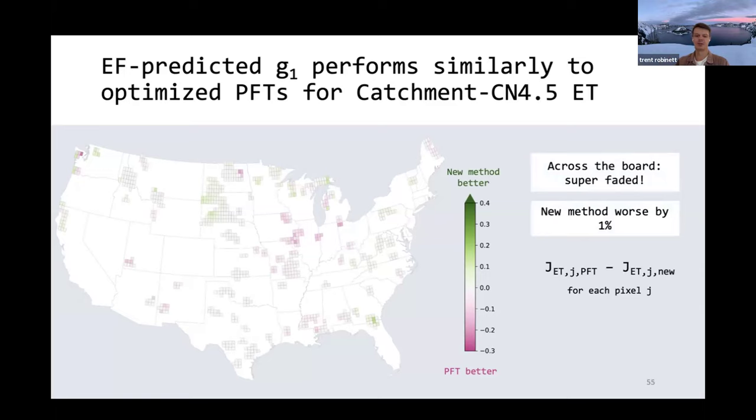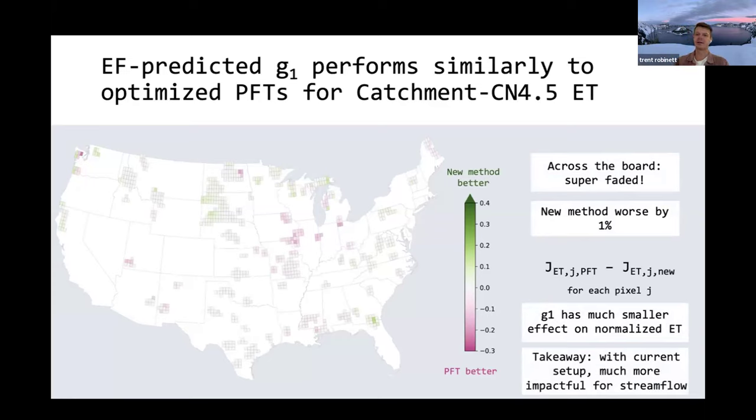The takeaway here that I show in subsequent analyses I don't have time to get into here is really that g1 just has a much smaller effect on normalized ET than it does on normalized stream flow. So with the current setup of how I've been optimizing our new methods and comparing PFTs and my new method, g1 is just much more impactful on stream flow. And we're seeing the majority of the impact on stream flow as opposed to ET.